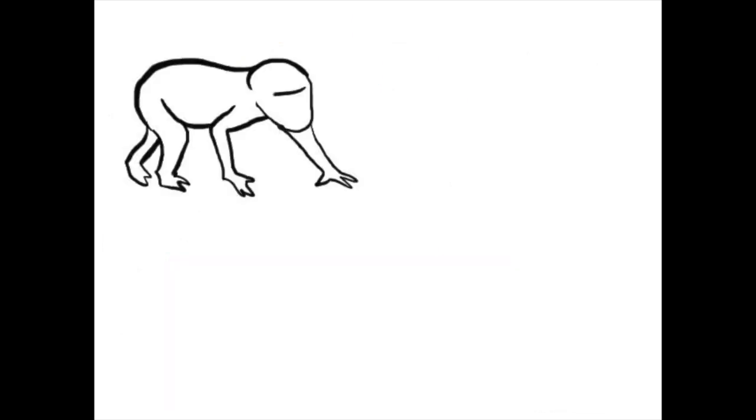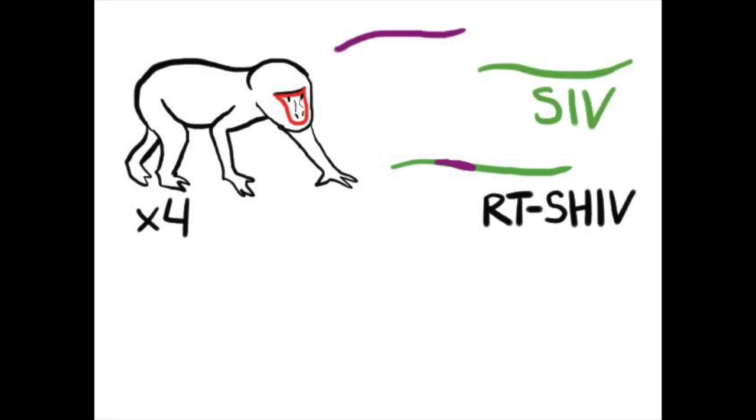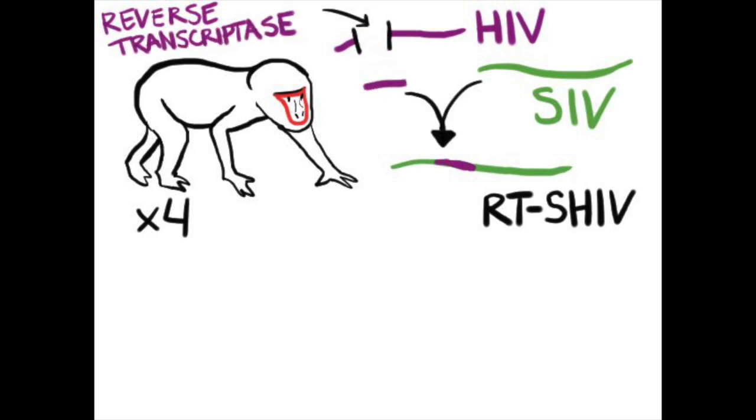Because humans are difficult to sample, we examined data from four macaques infected with RT-SHIV, which is a simian immunodeficiency virus, or SIV, with one critical region, reverse transcriptase, replaced with the HIV version. The macaques were then treated with normal HIV drugs that target reverse transcriptase.